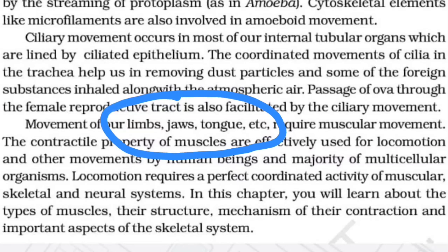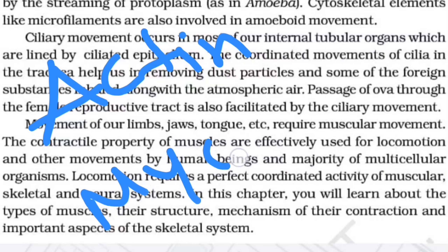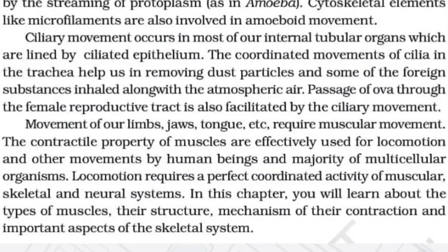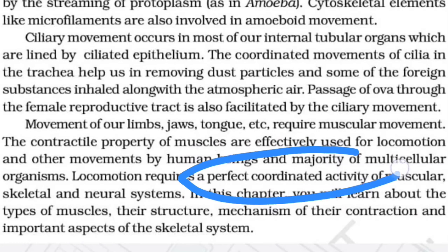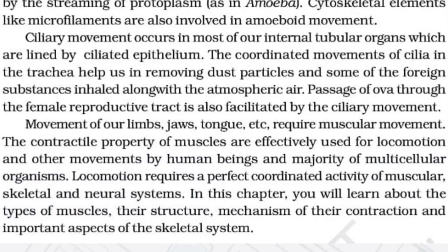The movement of limbs, jaws, tongue, etc. requires muscular movement. The contractile properties of muscles — specifically the contractile proteins actin and myosin — are effectively used for locomotion and other movements. Locomotion requires a perfectly coordinated activity of the muscular, skeletal, and neural systems — all three must work in a coordinated fashion for us to walk.